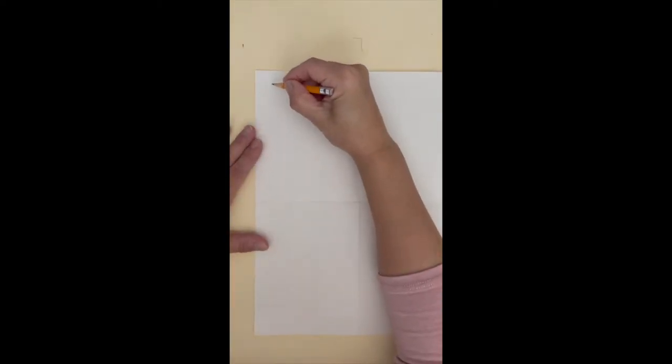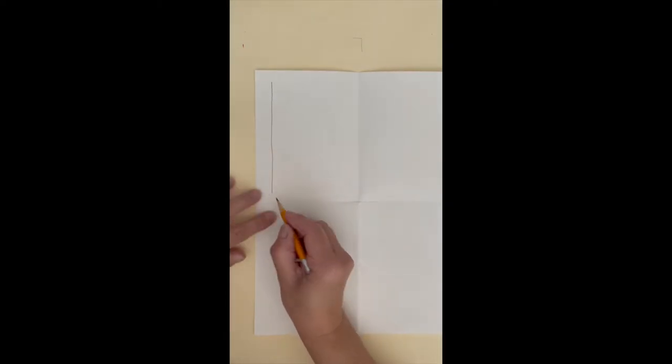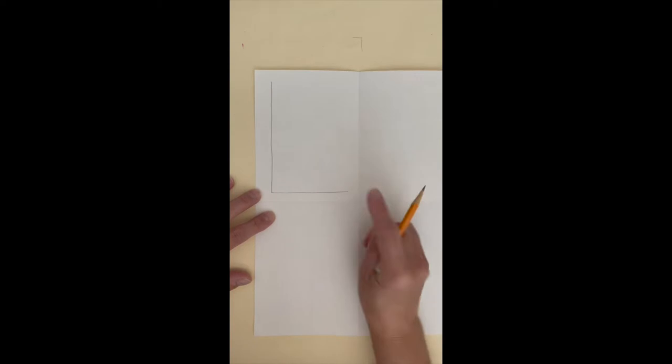In the first box we're going to make a block letter L. Leave about a finger space at the top, on the side, and at the bottom of your L.